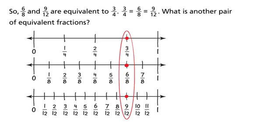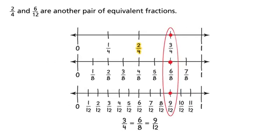So, six-eighths and nine-twelfths are equivalent to three-fourths. Three-fourths is equal to six-eighths, which is equal to nine-twelfths. What is another pair of equivalent fractions? Two-fourths and six-twelfths are another pair of equivalent fractions.